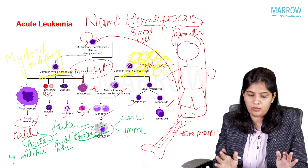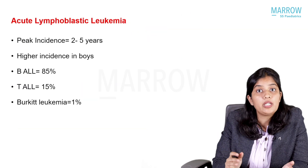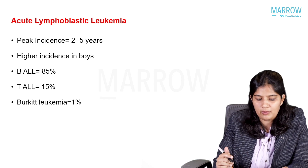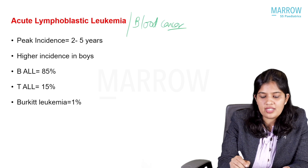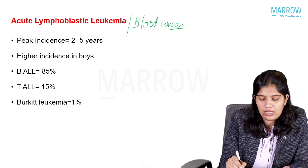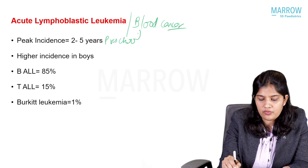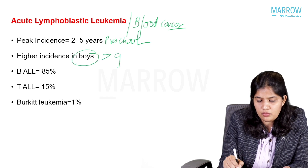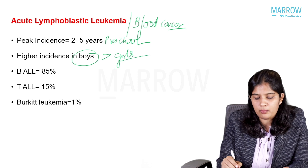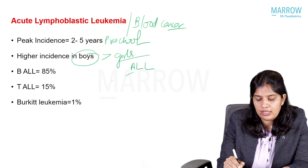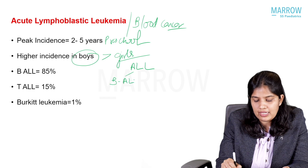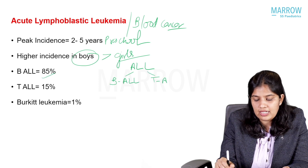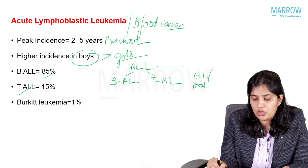In pediatrics, coming to the epidemiology of childhood acute lymphoblastic leukemia — in layman's terms, it is also called blood cancer. ALL is most common in the preschool age group, that is 2 to 5 years, and has a higher incidence in boys compared to girls. We can subtype ALL based on the characteristics of the blast: approximately 85% is B-ALL, around 15% is T-ALL, and only 1% is Burkitt leukemia or mature B-ALL.